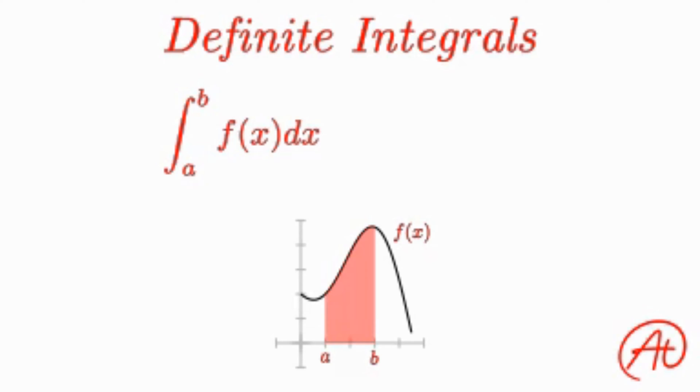The only difference between indefinite and definite integrals is this a and b here. All these letters represent are the points you want to find the area between, where the point on the bottom is known as the lower bound, and the point on the top is known as the upper bound.